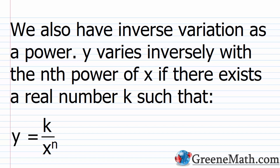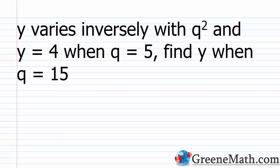To wrap up the lesson, we're also going to see inverse variation as a power. It's no more difficult — just plug things in, figure out k, and follow up with your scenario. Y varies inversely with the nth power of x if there exists a real number k such that y equals k over x to the nth power. For example, y varies inversely with q squared, so y equals k over q squared.